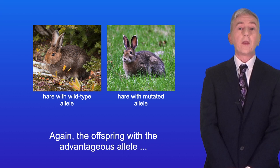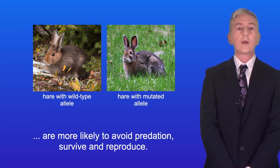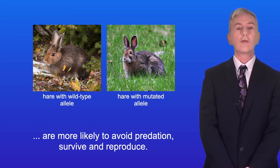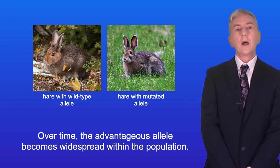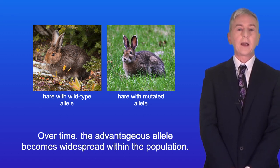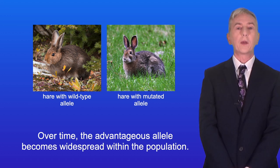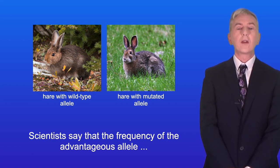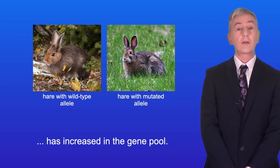The offspring with the advantageous allele are more likely to avoid predation, survive and reproduce. Over time, the advantageous allele becomes widespread within the population. Scientists say that the frequency of the advantageous allele has increased in the gene pool.